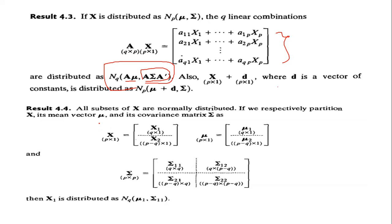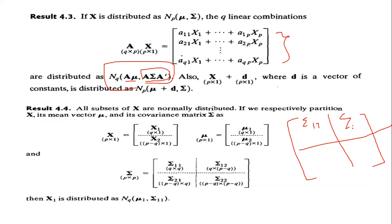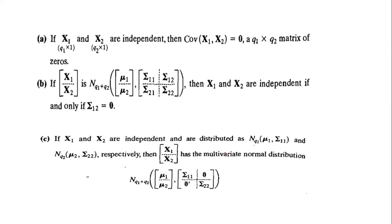All subsets of x are normally distributed. If we partition x and its mean vector mu, and partition sigma into submatrices, for example partitioning a 4x4 sigma matrix into 2x2 blocks labeled sigma-11, sigma-12, sigma-21, sigma-22, then we can apply this rule to find means and covariances. For a 6x6 matrix the same procedure applies. This x matrix and mu matrix follow from the partitioning.